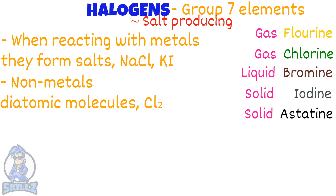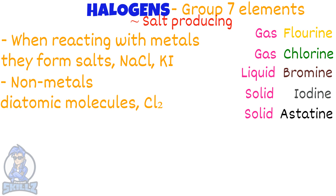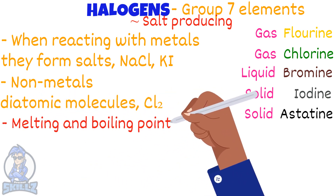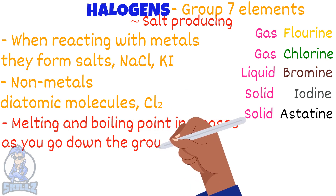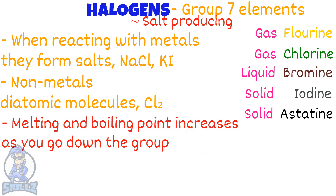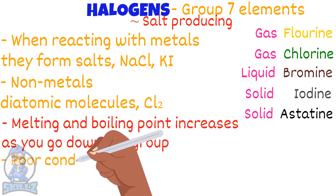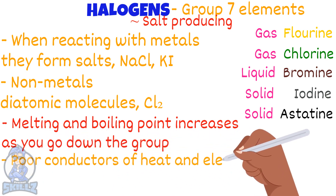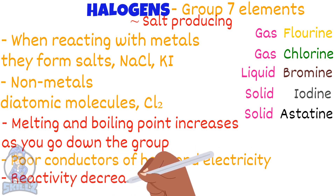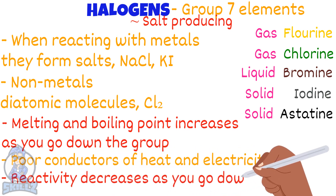There are a few more properties of the halogens. As you go down the group the melting and boiling point will increase, as the strength of the intermolecular forces will increase with size. All halogens are poor conductors of heat and electricity, and the reactivity decreases as you go down.